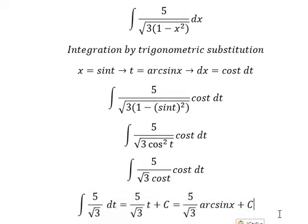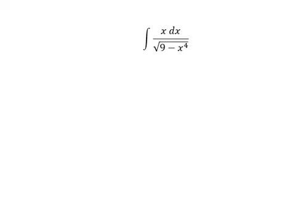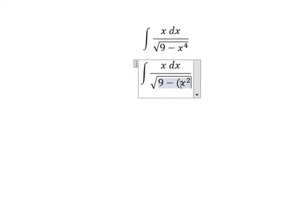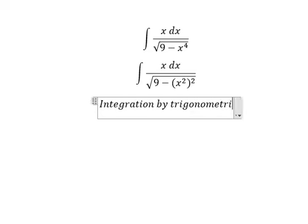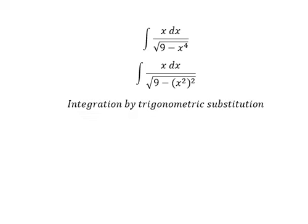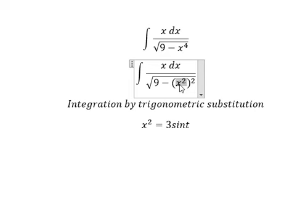This is the final answer. Now let's go to the next one. This one is about x to the power of two. We can use integration by trigonometric substitution. I will put x² equal to 3·sin(t). If I put this in here, we have 9·sin²(t). We can do factorization: 9(1 minus sin²(t)), which equals 9·cos²(t). Later we simplify by taking dx.